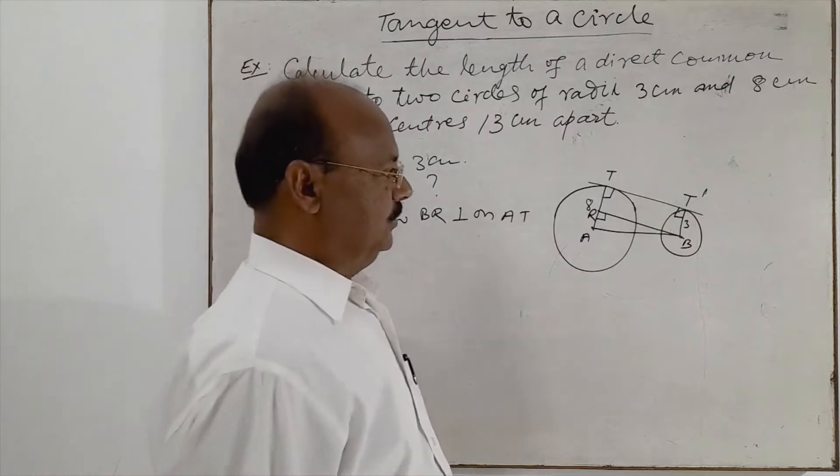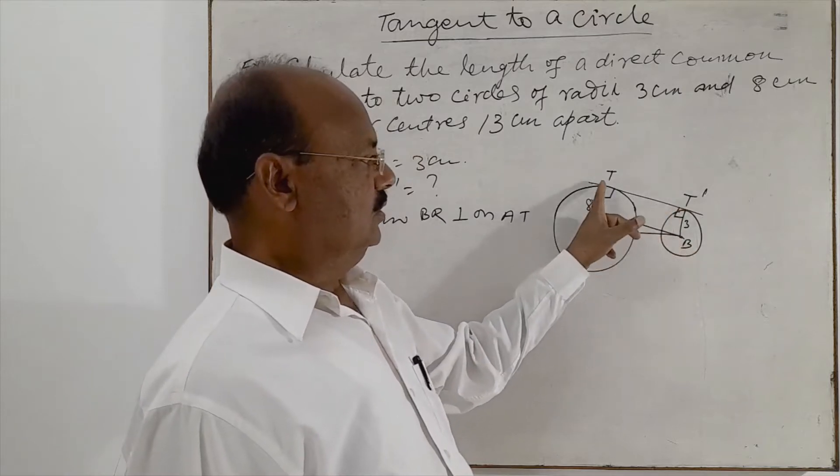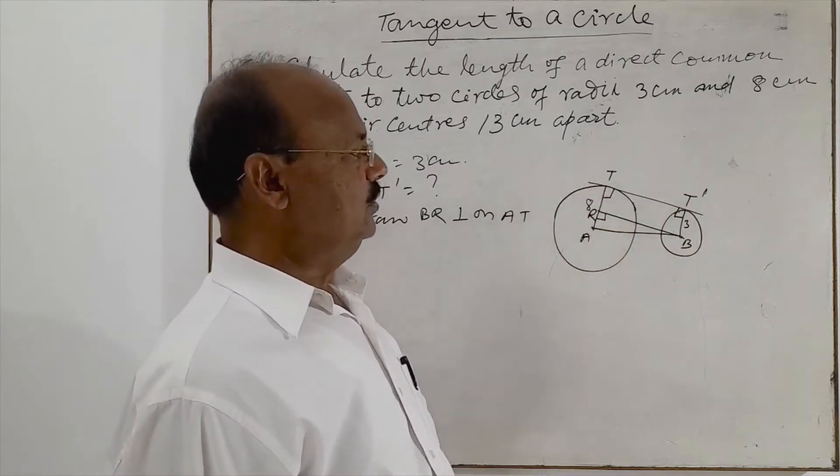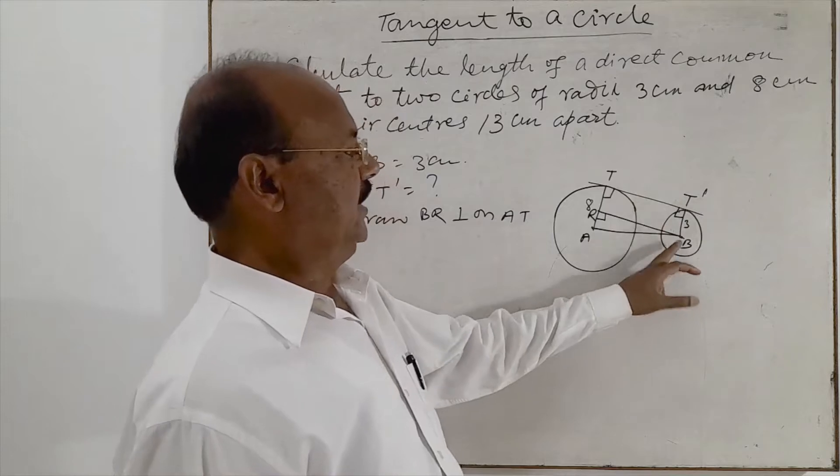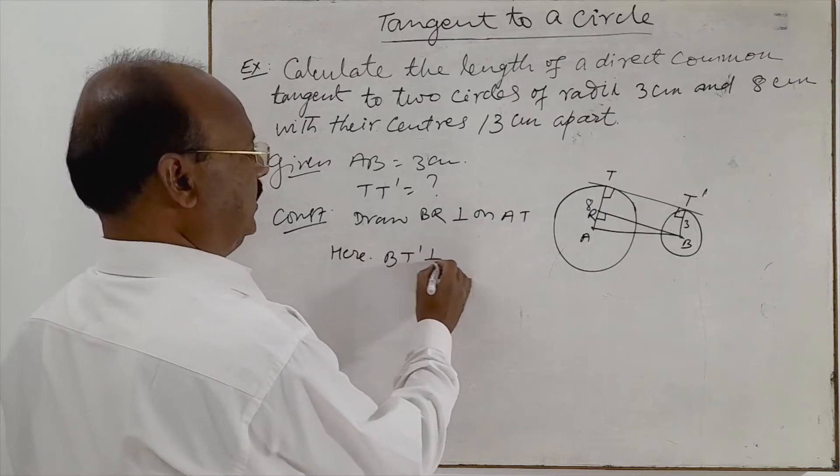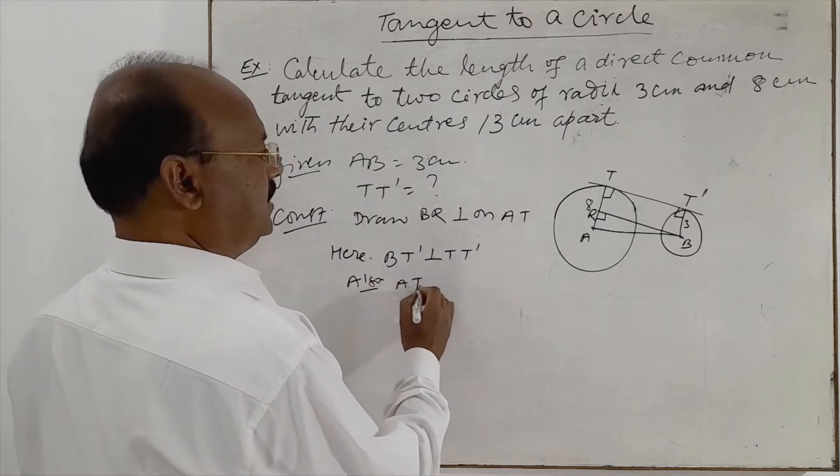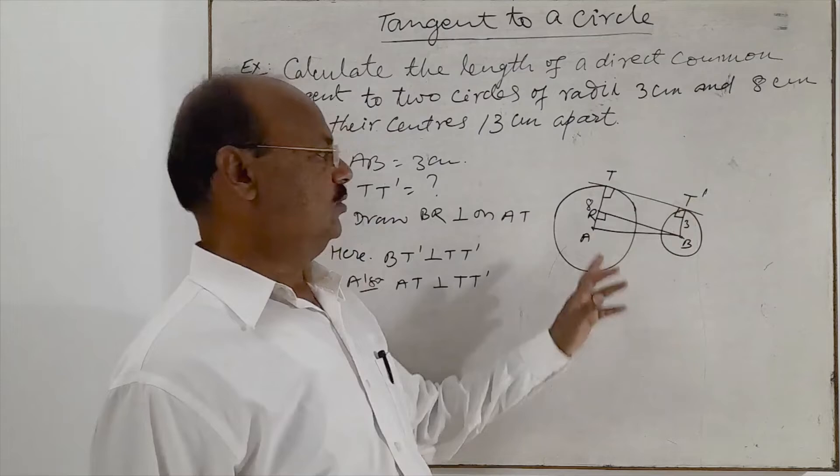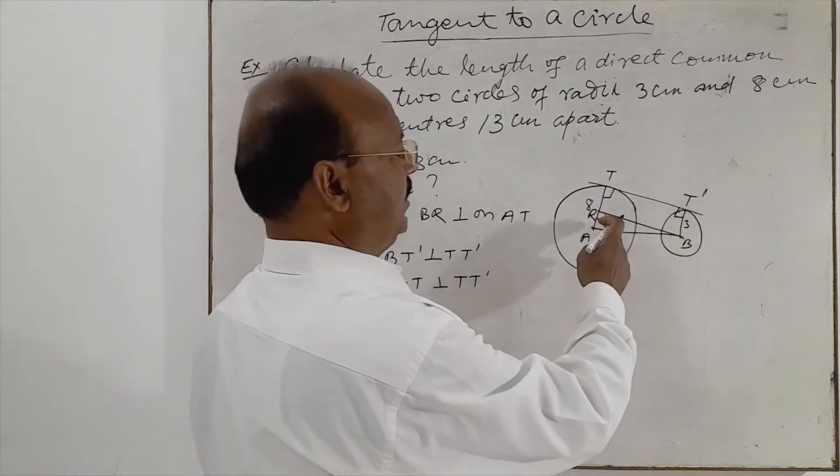Now let us discuss the solution. Here TT' is a common tangent. So this tangent is perpendicular to BT' as well as AT because we know that tangent is always perpendicular to the radius at the point of contact. So here we see that BT' is perpendicular on TT' and also AT is perpendicular on TT' and radii are perpendicular to the common tangent. So these two angles are right angles and by construction BR is perpendicular to AR.